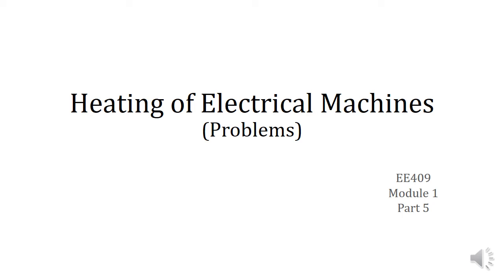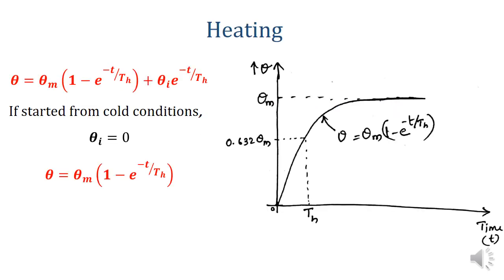Today we will practice some problems on heating of electrical machines. The equation for a machine under heating is given by theta equals theta_m times (1 minus e raised to minus t by th) plus theta_i times e raised to minus t by th, where theta is the temperature rise, theta_m is the final steady state temperature rise, and theta_i is the initial temperature rise. If the machine is started from cold conditions, theta_i equals 0, so the general heating equation becomes theta equals theta_m times (1 minus e raised to minus t by th).